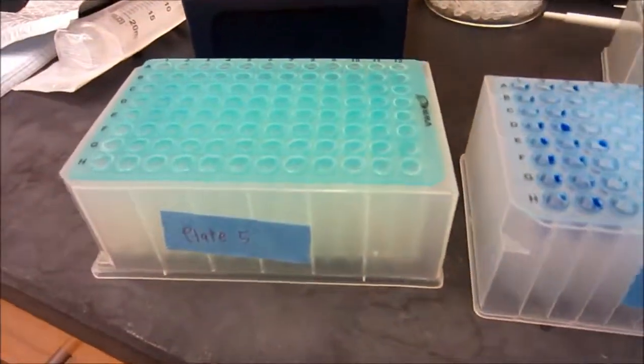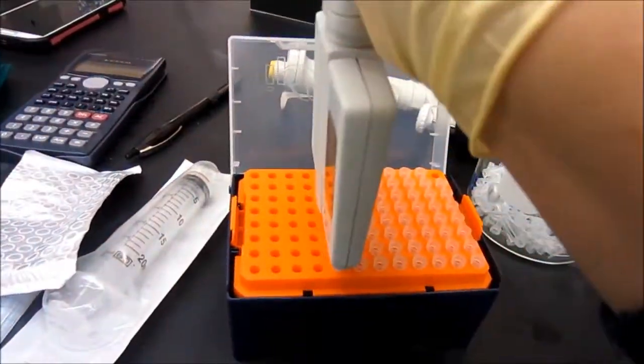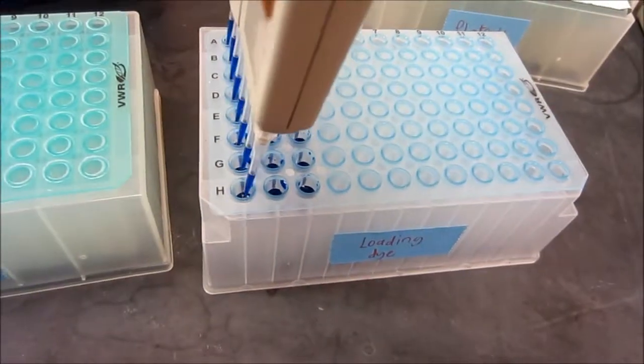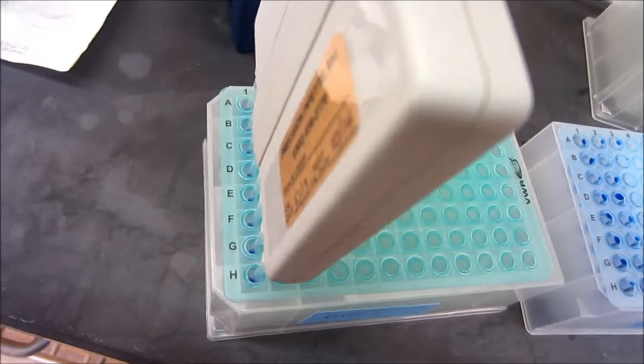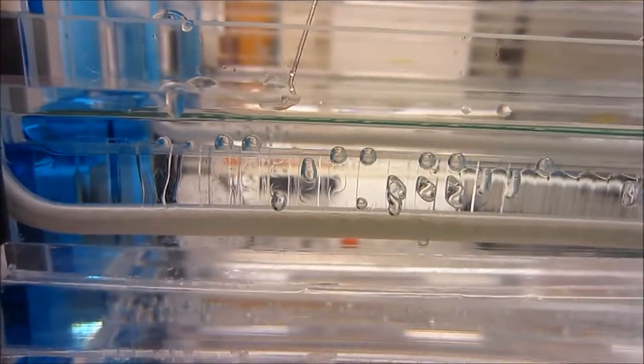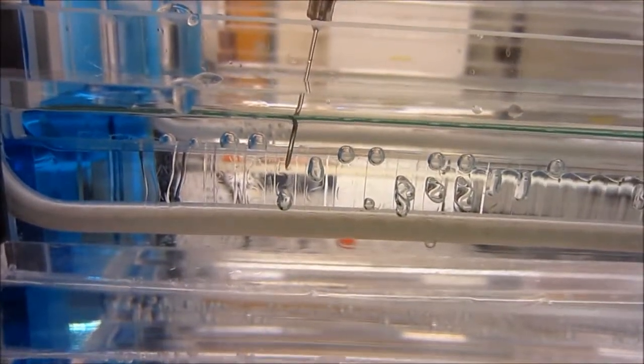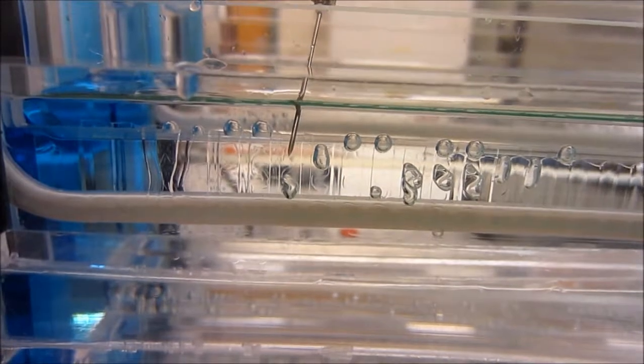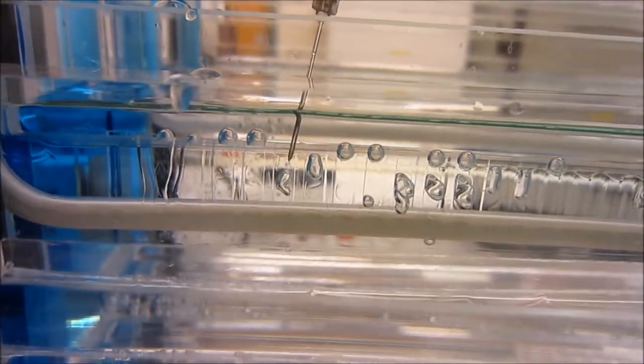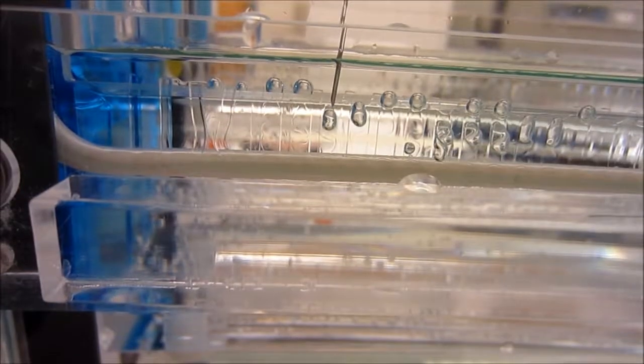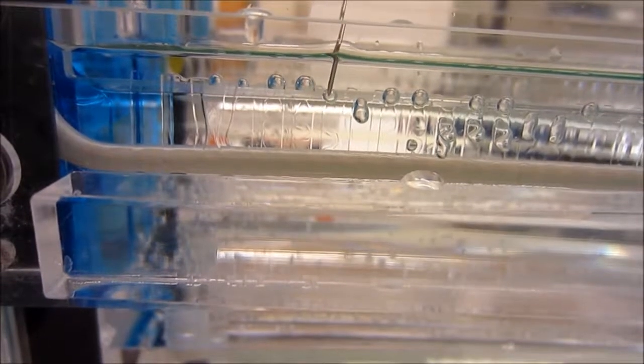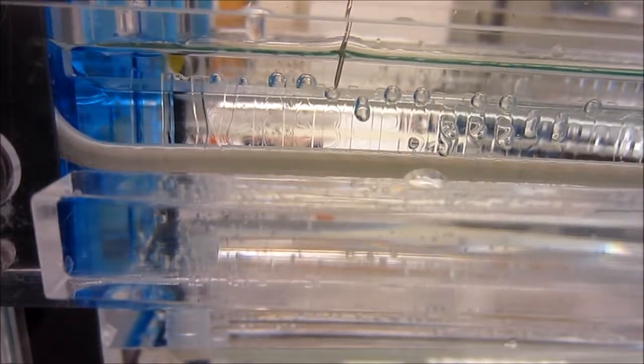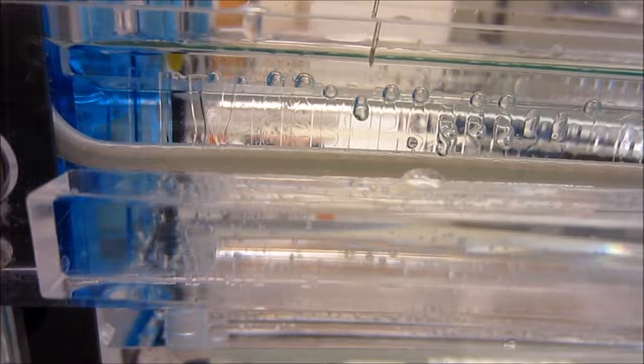In this step, loading dye is mixed into each well of PCR products. Before loading the sample, it is really important to take out all bubbles present in the gel well. This is done by using a syringe to inject a necessary amount of one times TBE buffer so that bubbles will float out.